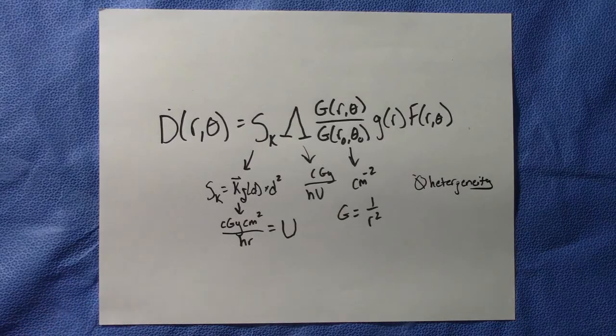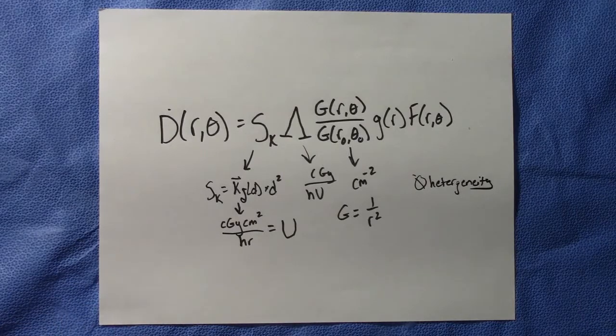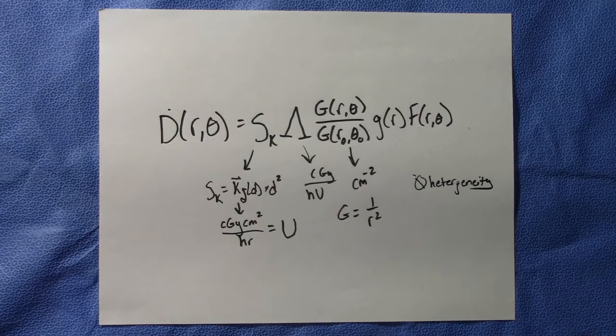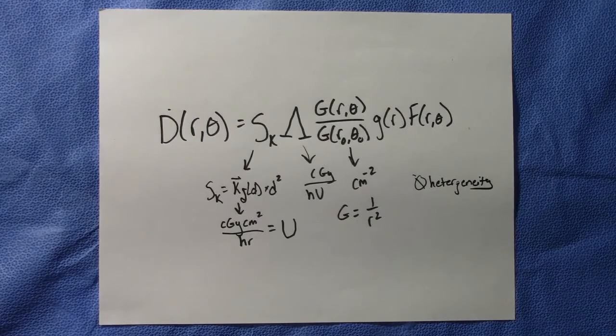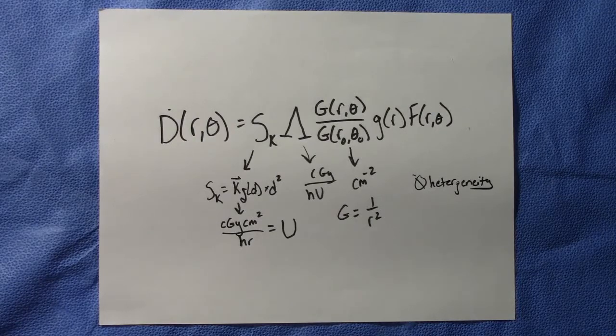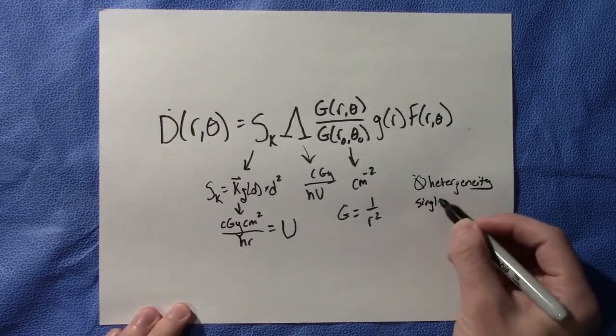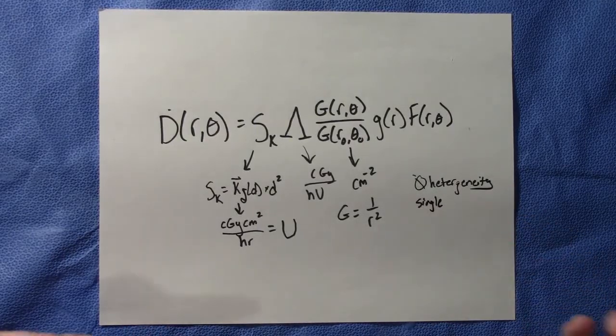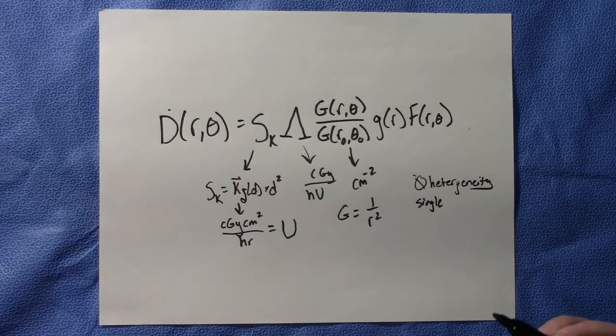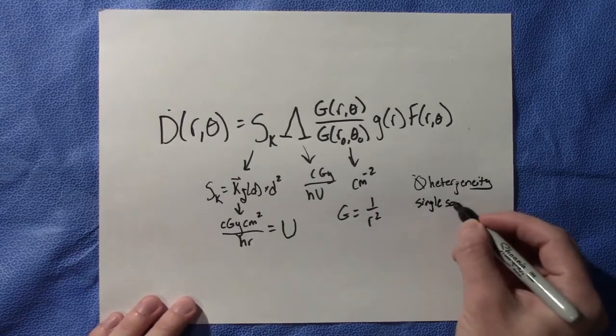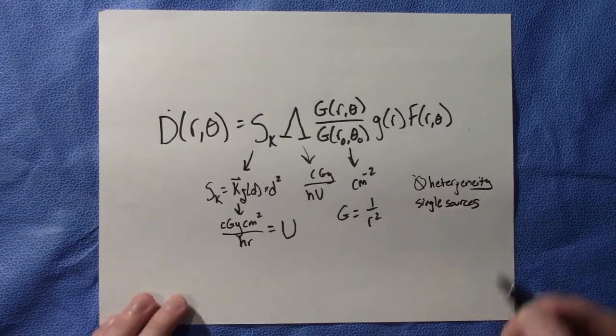And so regardless of whether it's maybe a true dose or not, we know what works and what is accurate. And it also assumes a single source. Obviously, we have different softwares that can consider multiple sources, multiple dwell positions. And so we found ways around that, but it's still a limitation of TG43.